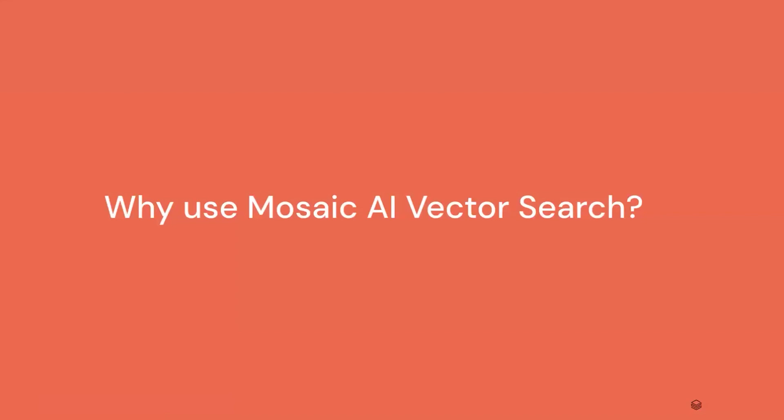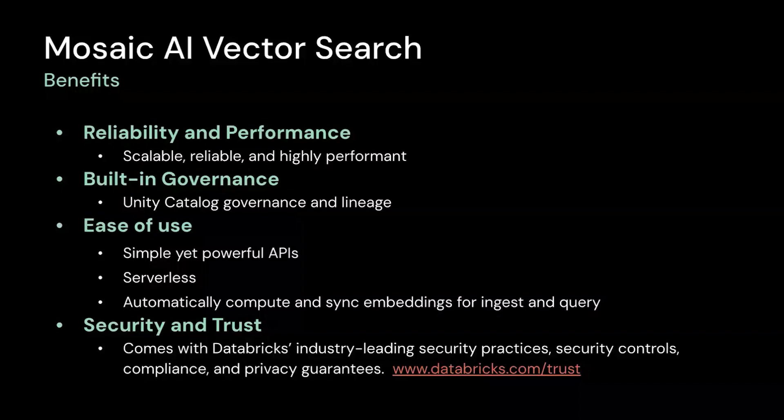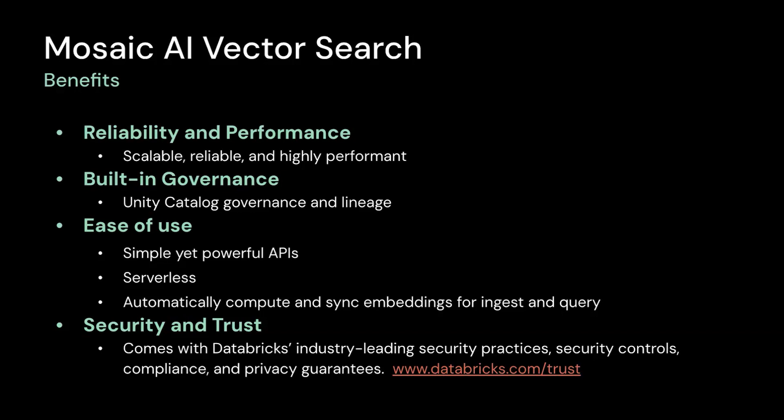Now, let's talk about why you should use Mosaic AI Vector Search. There are several benefits. First is reliability and performance. Our Vector Search is scalable, reliable, and highly performant. It has extremely fast index build times with the Delta Sync API, and automatically scales out to handle billions of embeddings in an index and thousands of queries per second. Second, it has deep integration with Unity Catalog, and you can take full advantage of UC governance and auditing capabilities. Vector Search shows data lineage and tracks it automatically without the need for additional tools or security policies. This ensures LLM models won't expose confidential data to users who shouldn't have access.